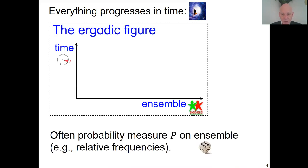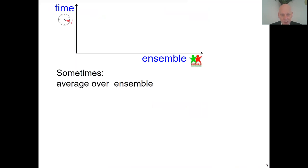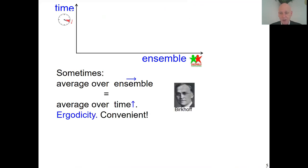Often we have randomness in the ensemble. For instance, with the UK population, we calculate relative frequencies, giving probabilities and randomness. Sometimes it happens that the average over the ensemble is the same as the average over time. We call it ergodicity, and that is convenient. Then studying deterministic processes gives insight into randomness and vice versa.